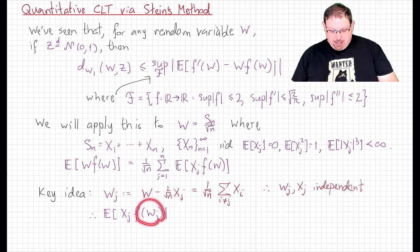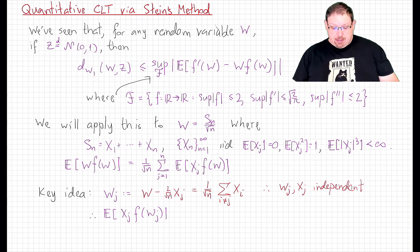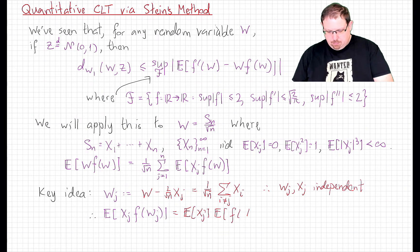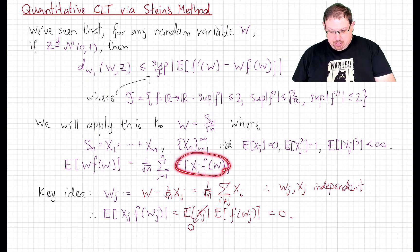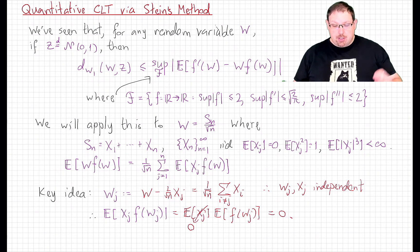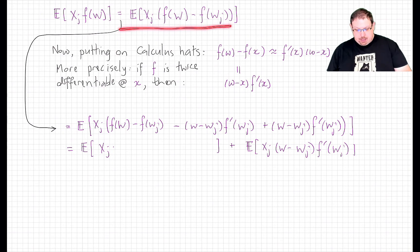Therefore f(w_j) is independent from x_j. Since f is bounded, f(w_j) is certainly L1; x_j is L3 and therefore L1. So the expected value of their product factors. But we centered the x_j's from the start, so E[x_j f(w_j)] = 0. Now, w and w_j differ by x_j/√n, which is small, so we consider the difference f(w) - f(w_j). The term we want to sum equals this expected value, since E[x_j f(w_j)] = 0, and we've expressed things in terms of a finite difference of f.